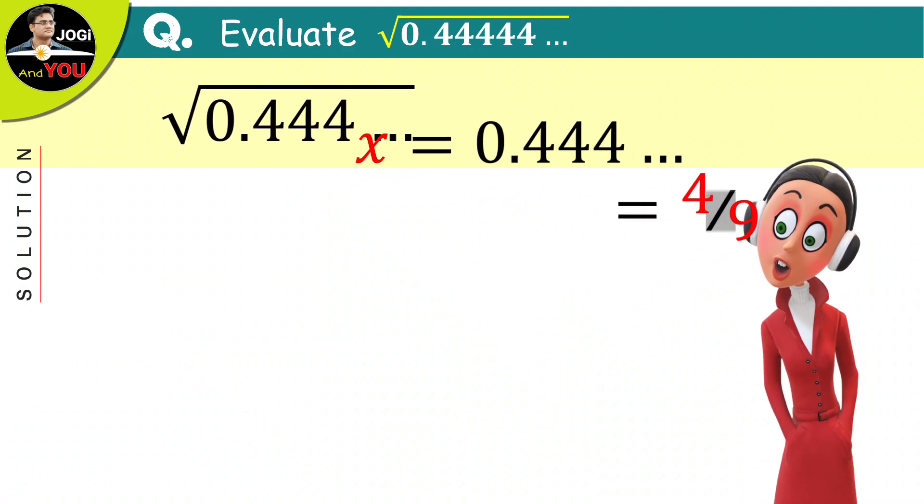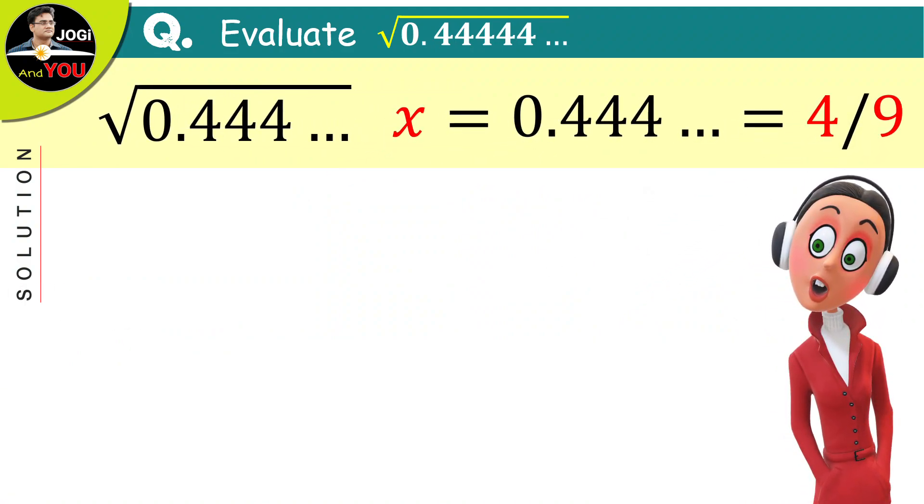Keep those things aside here which we will use later. And now, come to our actual question in which we have the number under root 0.444 dot dot dot that means till the infinite. Replace this number with x because initially we assumed that x is equal to 0.444 dot dot dot till infinite.